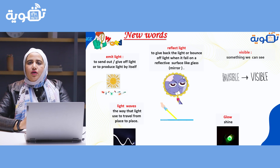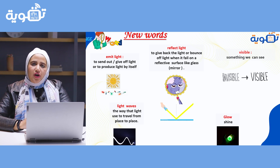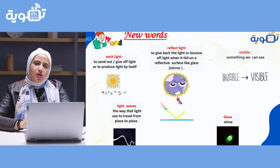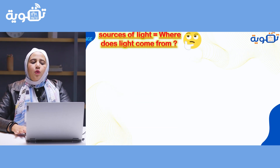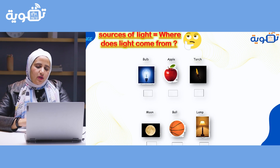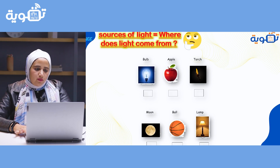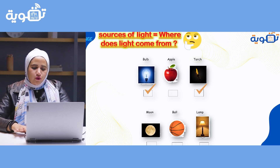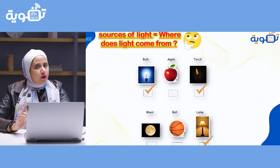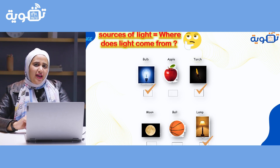Glow or shine. Okay, where does light come from? Think about it. Does it come from a light bulb? Yes! Apple? No. Torch? Of course. Moon? No. Ball? No. And a lamp.